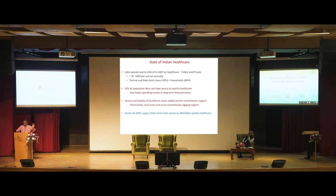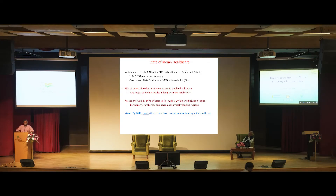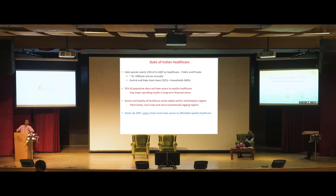What is the problem today? First, about 25 percent of the people don't have access to any significant medical care, and expenditure pushes them into a very bad financial state for several years — and that's where the government has come up with certain schemes. The quality and access also varies widely across regions and within regions, particularly in rural areas.